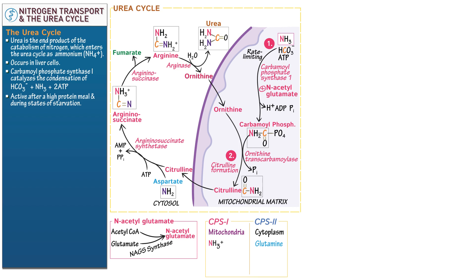CPS1 requires N-acetylglutamate as an allosteric activator. We learned that it requires a high-protein meal or some sort of protein activator to drive the urea cycle, whereas CPS2 does not. This makes sense because the body's constantly needing nucleic acids.